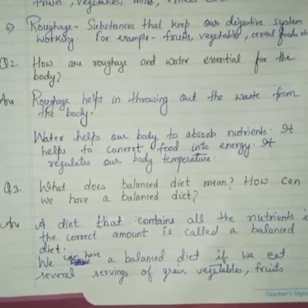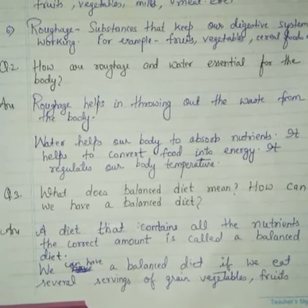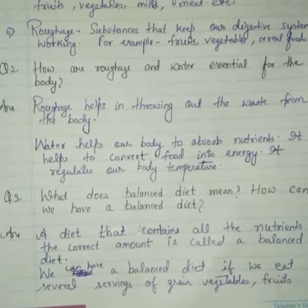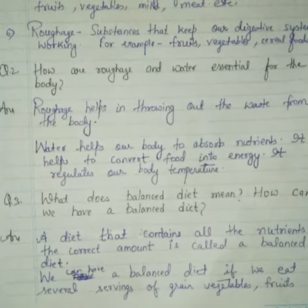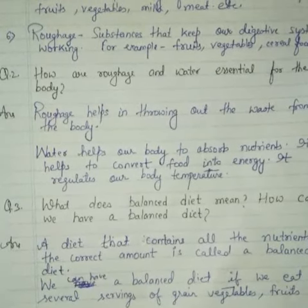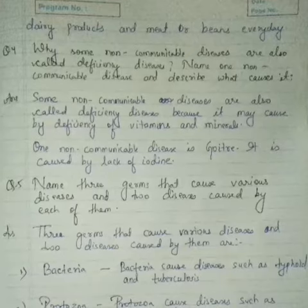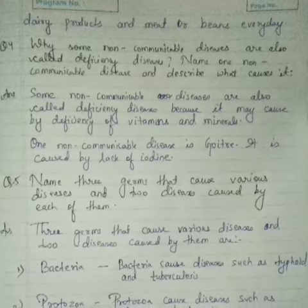Question three: What does a balanced diet mean? How can we have a balanced diet? A diet that contains all the nutrients in the correct amount is called a balanced diet. We can have a balanced diet if we eat several servings of grains, staple fruits, dairy products, and meat or beans daily.